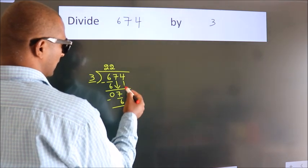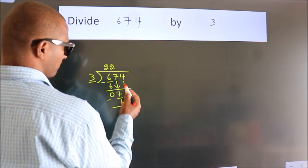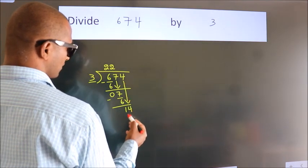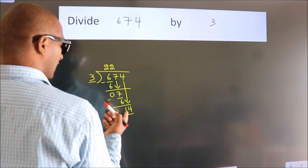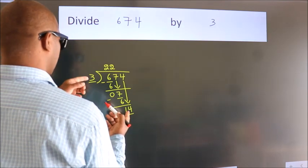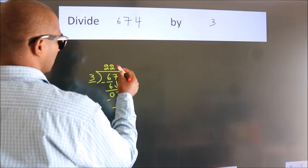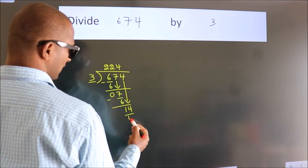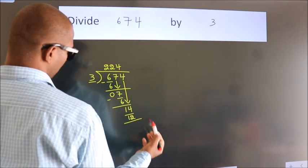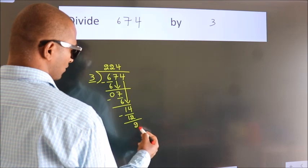After this, bring down the beside number. So 4 down, giving us 14. A number close to 14 in 3 table is 3 times 4, which is 12. Now we subtract. We get 2.